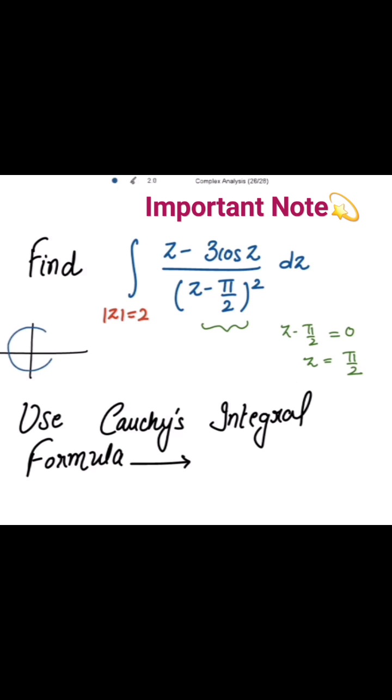The given circle is having the radius 2. And the point is z equal to pi by 2, which is equal to pi by 2 in radians is approximately 1.570.